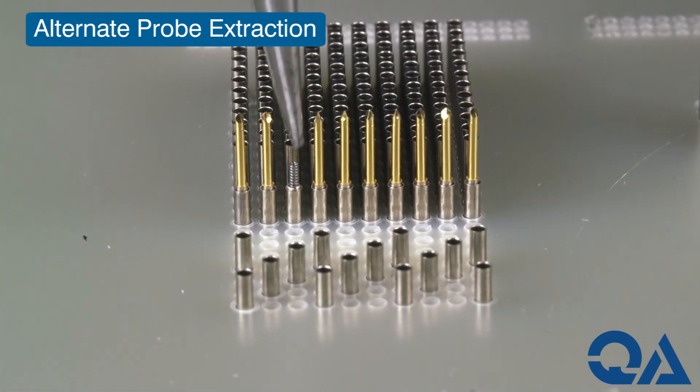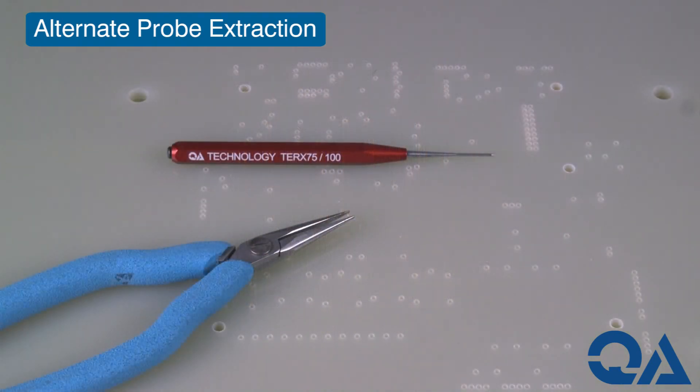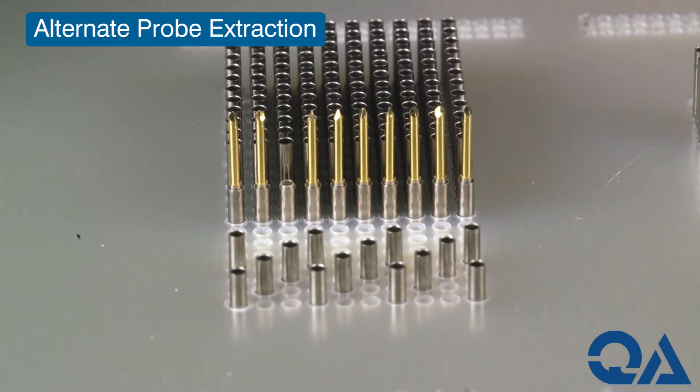Remove any of the remaining components of the broken probe. If the probe tube has become deformed, this tool can also be used to reform the tube before extracting.